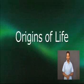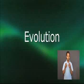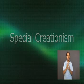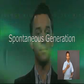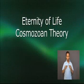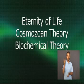In our last lesson, we learned about the definition of evolution and we talked about two theories on the origin of life: special creationism and spontaneous generation. In today's lesson, we will continue talking about more theories on the origin of life, focusing on the eternity of life, cosmozoan theory, and biochemical theory.